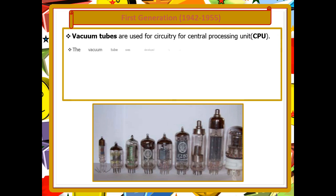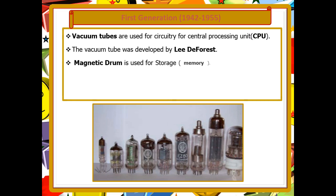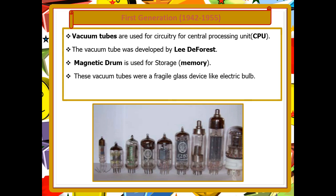In first generation computers, we used vacuum tubes for the central processing unit. This vacuum tube was developed by Lee De Forest, and we used magnetic drum for storage. Look at the figure - you can see the picture of vacuum tubes. In this picture, the vacuum tube looks exactly like an electric bulb.